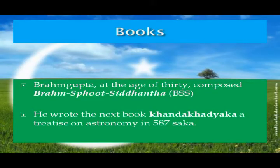He wrote many books. Brahmagupta at the age of 30 composed Brahmasphutasiddhanta. The short form is BSS. Brahmasphutasiddhanta, composed in AD 628, contains 25 chapters and deals with important astronomical and mathematical topics. The 12th and 18th chapters are on arithmetic, geometry and algebra. He wrote the next book, Kandakakhadyaka, a treatise on astronomy in 587 Saka, in which Brahmagupta suggests many improved methods.